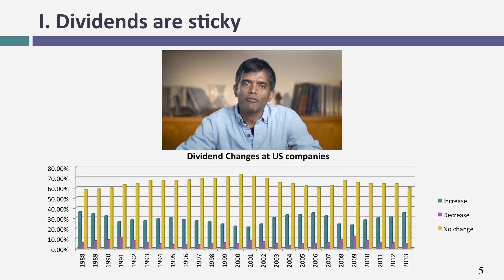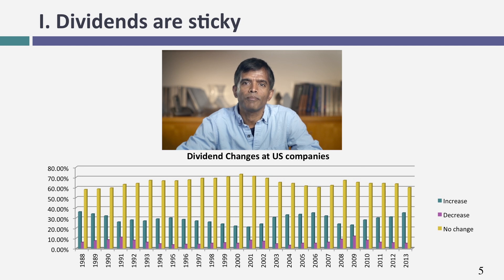If there's a word I would use to describe dividend policy across the world, it is that it's sticky. What I mean by that is companies are very reluctant to change the way they pay dividends. The best way I have of showing this fact is by looking at what U.S. companies do in terms of changing dividends each year, going back all the way to 1988. If you look at this graph, you have three columns. The first column — the dark yellow column — shows the percentage of companies each year that do nothing to dividends. In every single year, that column is by far the tallest. Most companies in most years pay exactly what they did in the previous year in dividends.